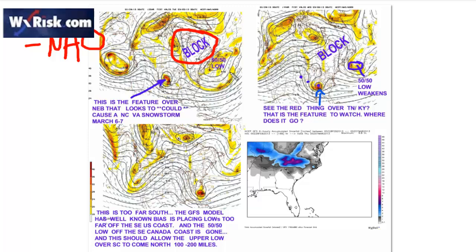There's the 50-50 low in southeast Canada. This feature has to go underneath it — it cannot go into those features. So sure enough, it drops down, and the GFS drops it off the Savannah coast, which is just ludicrous. That's just the classic GFS. The model's a piece of crap — always will be when it comes to East Coast storms this far out.